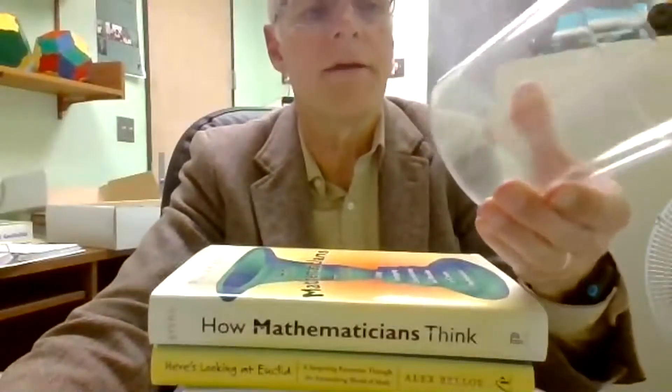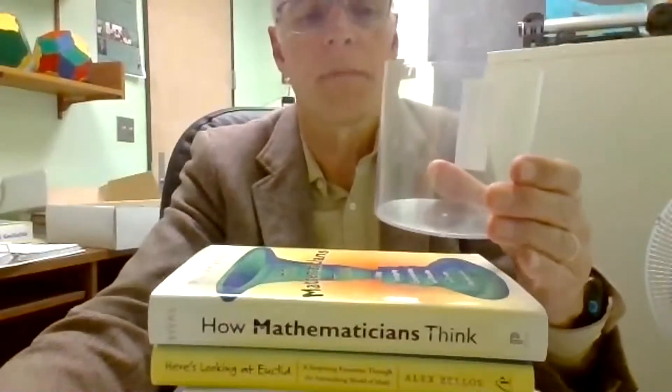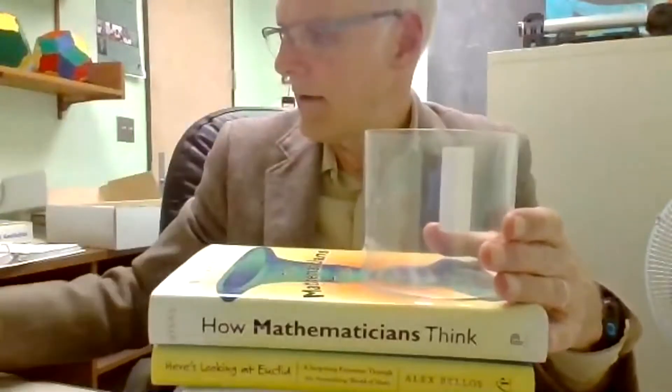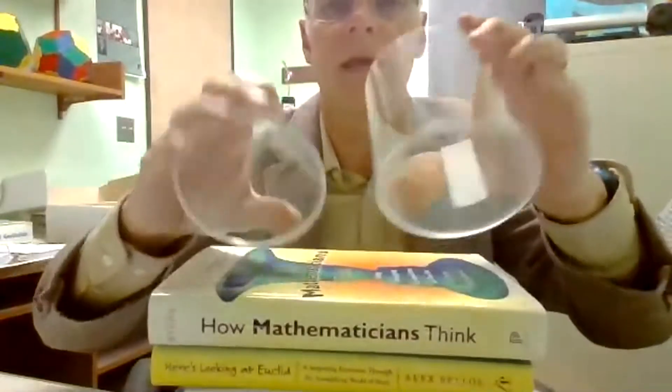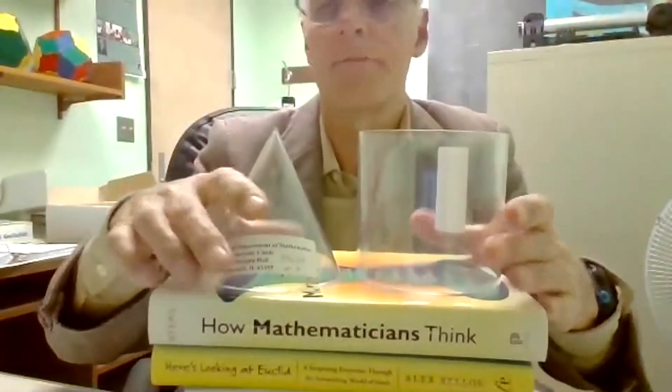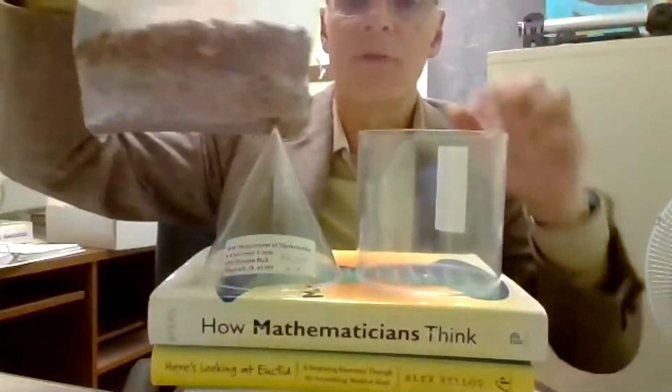So here I have a cylinder, and here I have the corresponding cone. These have the same height and they have the same circular base. And I have a bag of beans here.